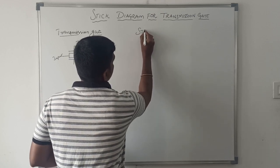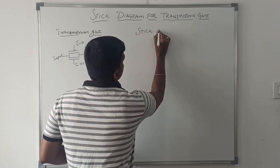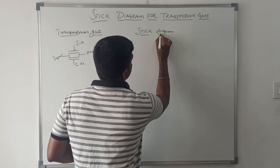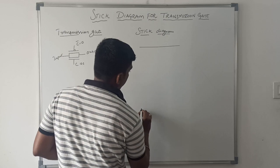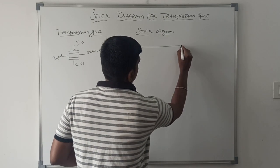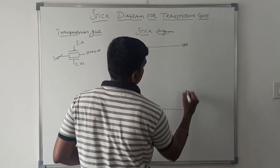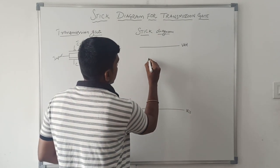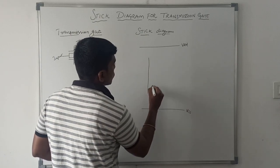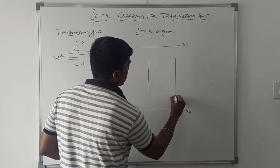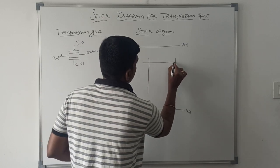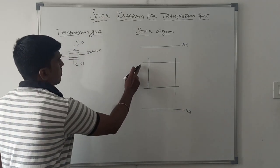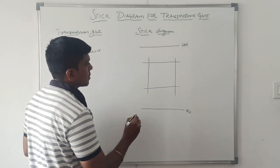First I draw VDD and VSS — that's the power supply. Then these two lines are polysilicon. This one is the PMOS transistor and this one is the NMOS transistor.